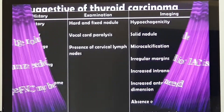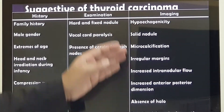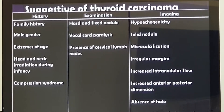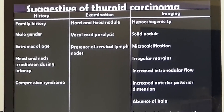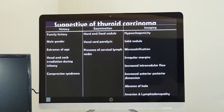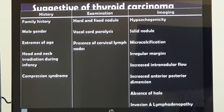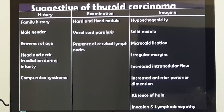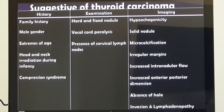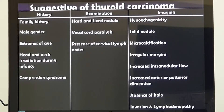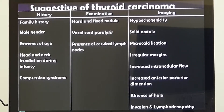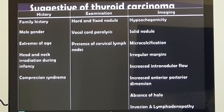In the ultrasonography of the neck, if we find any one or two of these features, I will go ahead and do fine needle aspiration even if the nodule is less than 10 millimeters: the nodules are hypoechoic — meaning solid nodule — along with microcalcification; margins are irregular; increased blood flow inside the nodule; increased anterior-posterior diameter; absence of halo; or the patient has an enlarged cervical lymph node on the same side as the thyroid swelling.